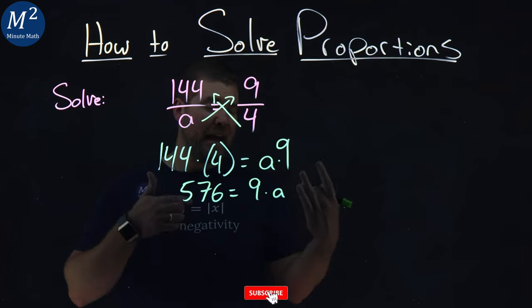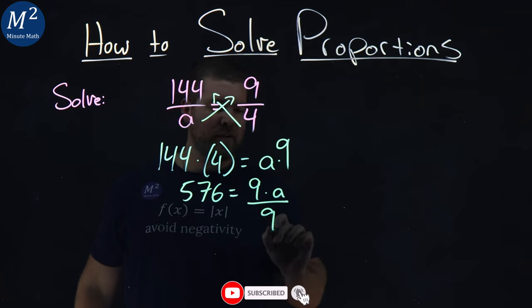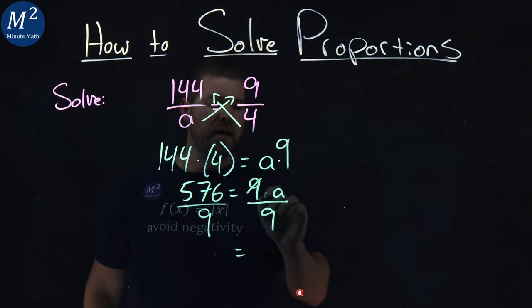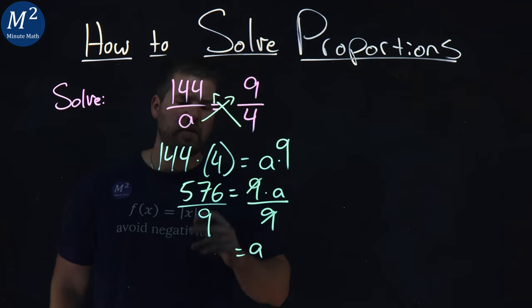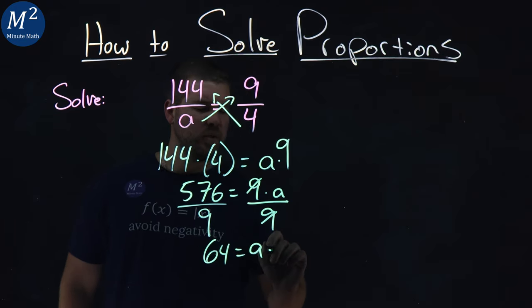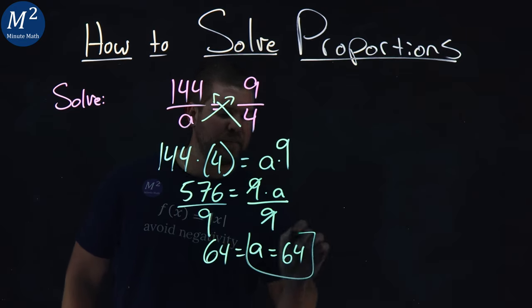Then, from there, we want to get A by itself, so we divide both sides by 9. The right-hand side, 9s cancel, and we have A by itself, and 576 over 9 is 64. So we have A equals 64 here, for our proportion.